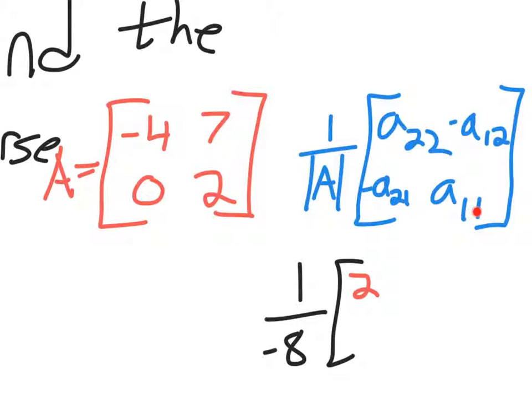This one says A_11. That means row 1, column 1. Row 1 is right here, column 1 is right here. So that's where they meet up at negative 4.